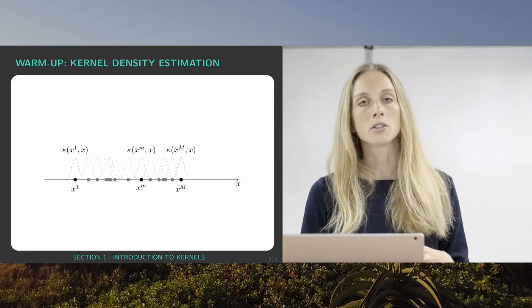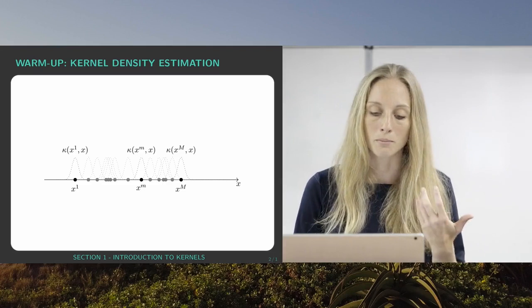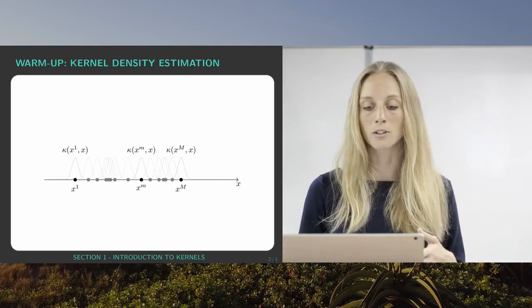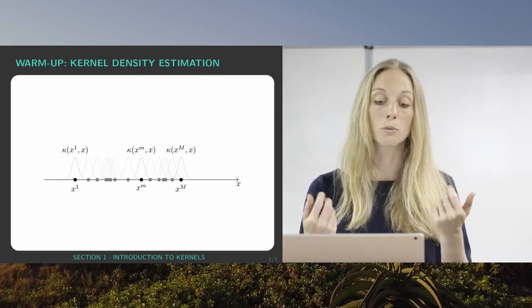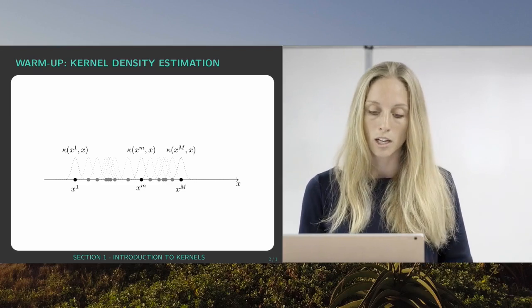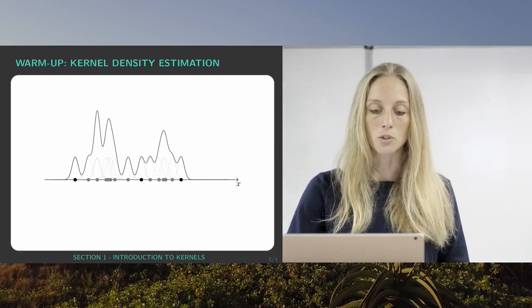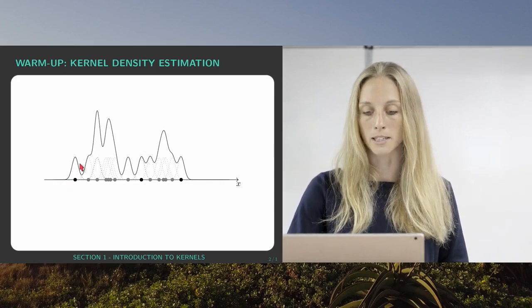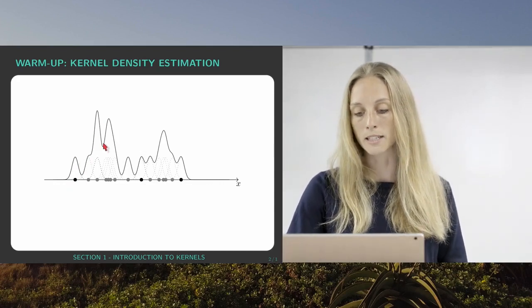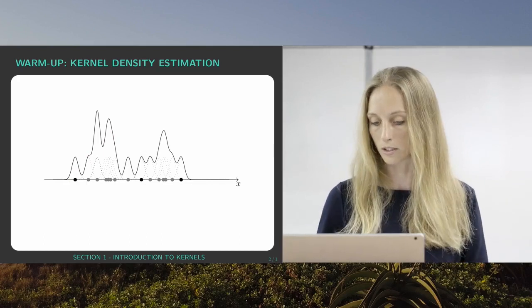And the idea of kernel density estimation is just to estimate the density of the probability distribution from which the data was actually drawn by just adding all these kernels together. So if I add all the Gaussian kernels here I see this is my density distribution and you see the density is larger where there are more data points in those areas.